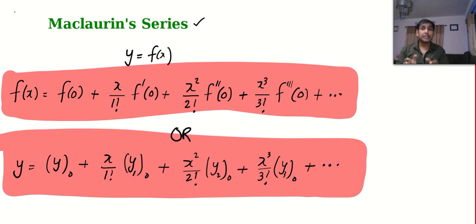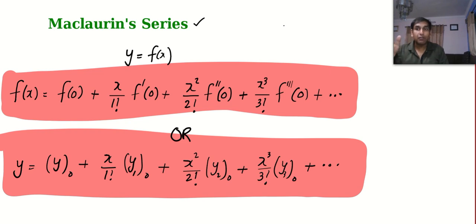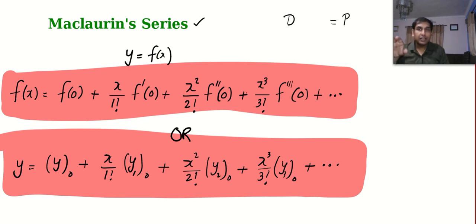The Maclaurin series is a technique which will help you convert a function into a series form. One advantage of converting functions into series form is you will be able to differentiate and integrate certain functions whose derivatives are hard to find. More than derivatives, it is very useful for integration. You have already seen one application of infinite series in differential equations — when you have the right side as a polynomial, this infinite series is one very good way of finding the particular integral.